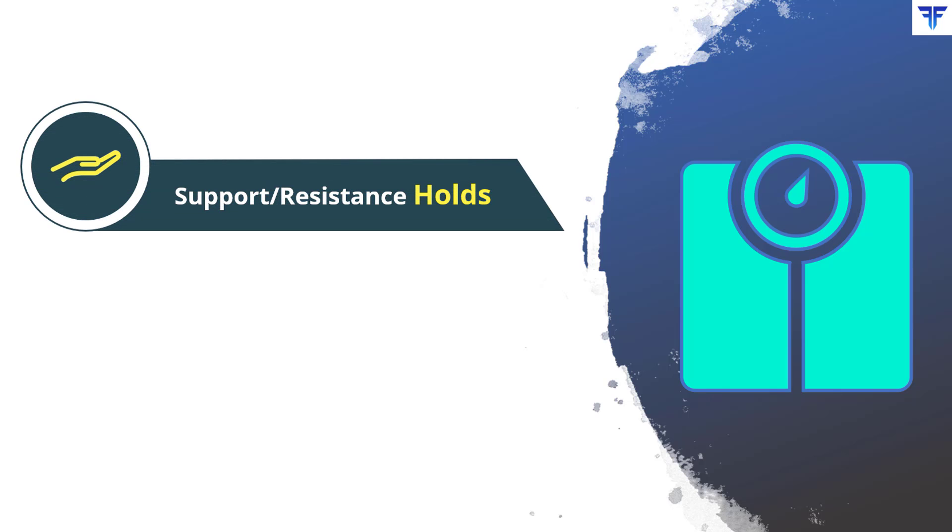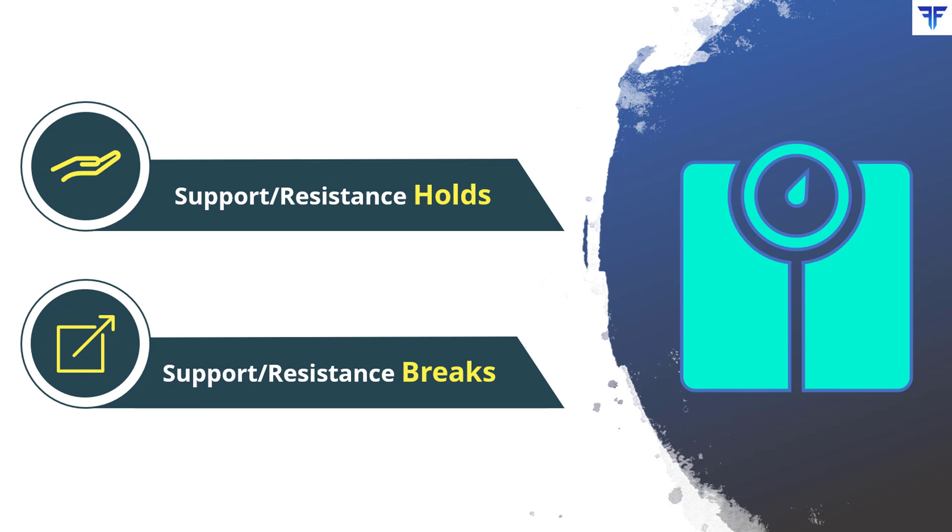Before starting, keep in mind that a support or a resistance need not necessarily appear at identical levels. As we saw in our earlier videos, a support or a resistance could appear in the form of a zone as well. Whenever a support or resistance is tested, it could either hold or break.